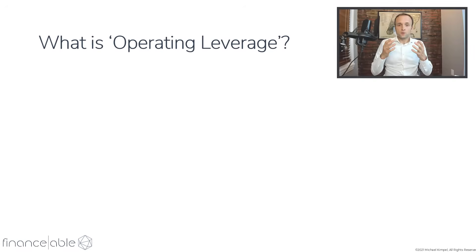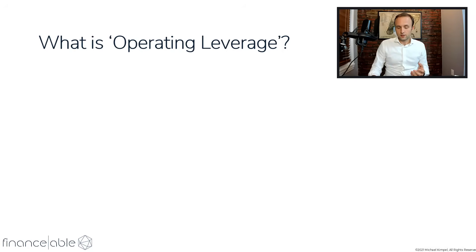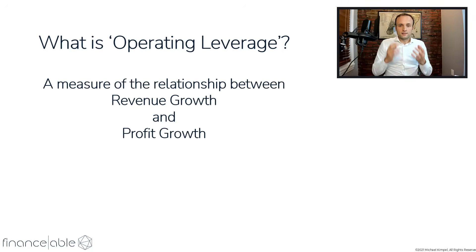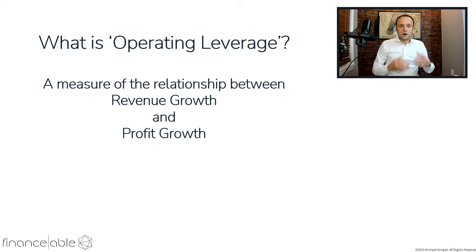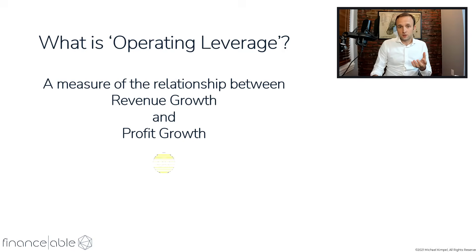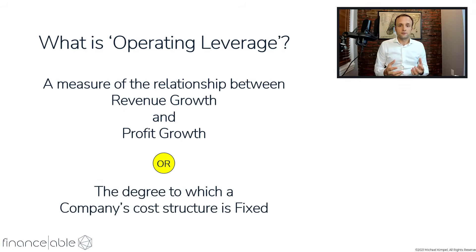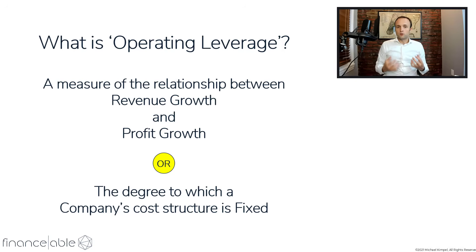So let's kick this off with what does the term operating leverage mean? Unfortunately, depending on who you talk to, you're going to get different answers. First, there's the more formal definition: operating leverage is a measure of the relationship between revenue growth and profit growth — or said differently, it's a look at how revenue growth turns into profit growth. But many times, particularly in the finance world, you'll hear that operating leverage is the degree to which a company's cost structure is fixed. As we'll see, these are both technically correct.